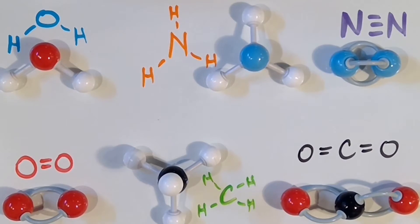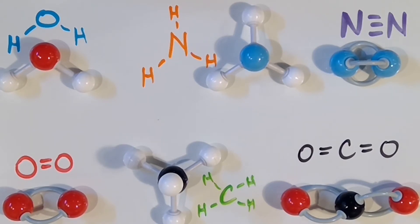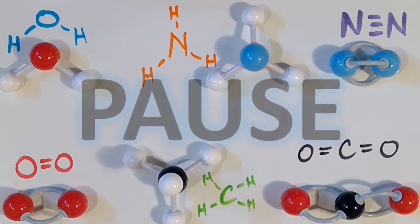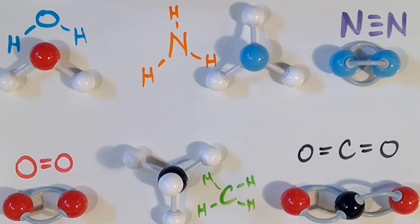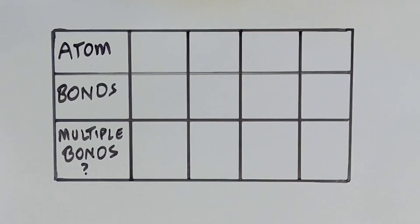Now that we have explored the structures for each of these molecules, let's identify some patterns, trends, or rules for how the atoms in molecules tend to arrange themselves. Look carefully at the molecular formula for each molecule. What patterns, trends, or rules can you come up with for how different atoms bond? Take a moment to pause the video and come up with some ideas about how the atoms in molecules tend to be arranged. How do hydrogen, carbon, oxygen, and nitrogen each behave? Now that you've taken a moment to look for any patterns, let's summarize them in a table.